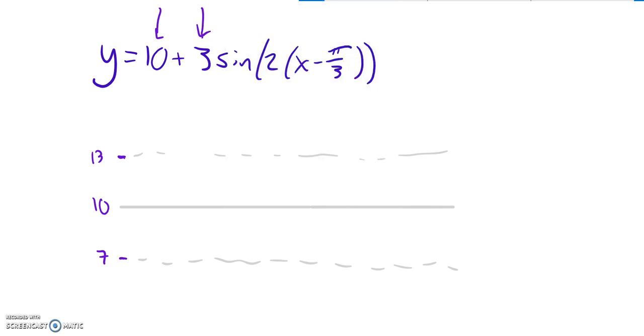Great, so that helps a lot. I know that it's sine. So since it's sine, I know that sine starts at the middle, goes up, back down, back down, back up to the middle. And that would be one kind of cycle for sine.